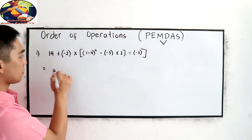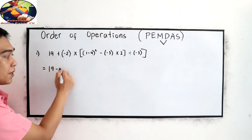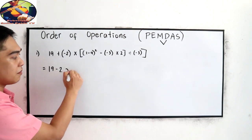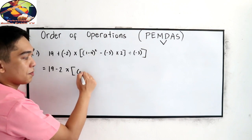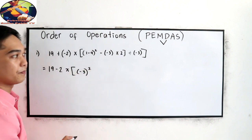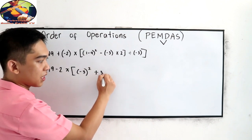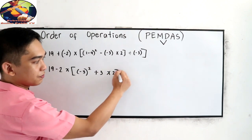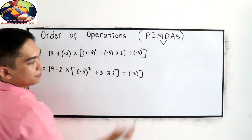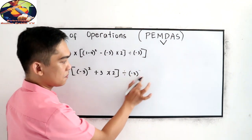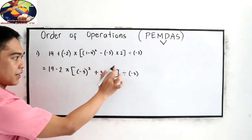From PEMDAS, we evaluate first inside our parenthesis. Just copy 19. Positive times negative 2 becomes negative 2. Inside the parenthesis: 1 minus 4 becomes negative 3, then you need to square it. And negative times negative 3 becomes positive 3, times 2, divided by negative 3. Close bracket.